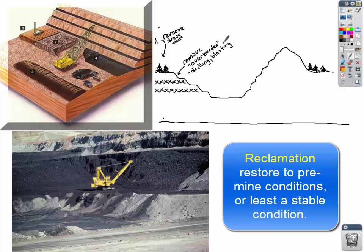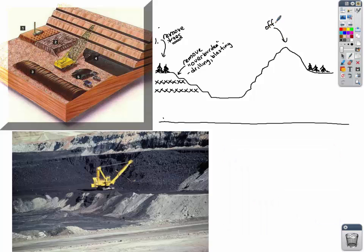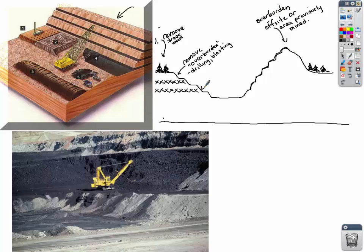The storing of the overburden usually occurs off-site, or we literally take the overburden and put it right behind us, which creates a man-made mountain. Later you can take that mountain and refill your hole. Once we've exposed the coal seam, we excavate that mineral and load it onto trucks — sometimes trains — to transport for processing. You can already think of some environmental impacts: the deforestation, the problem of the overburden where you're exposing soil and rock and piling it up.